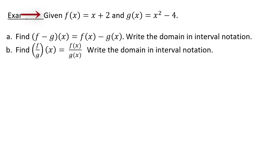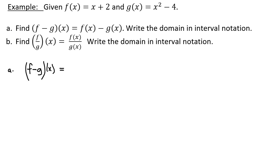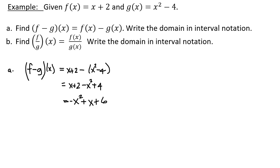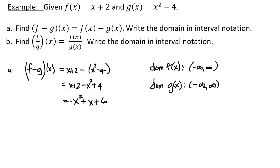Given f equals x plus 2 and g equals x squared minus 4, part A is to find the function f minus g of x and then write the domain. So f minus g of x equals x plus 2 minus (x squared minus 4), that's x plus 2 minus x squared plus 4, or negative x squared plus x plus 6. The domain of f is all real numbers, the domain of g is all real numbers, and their intersection is all real numbers.